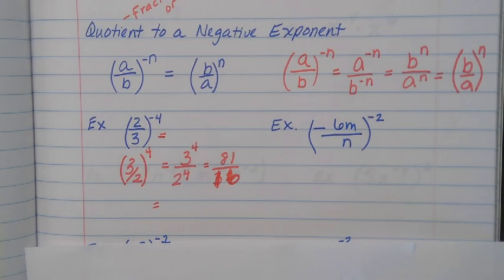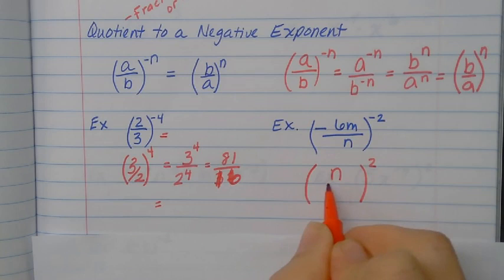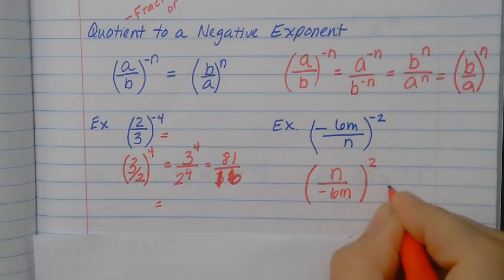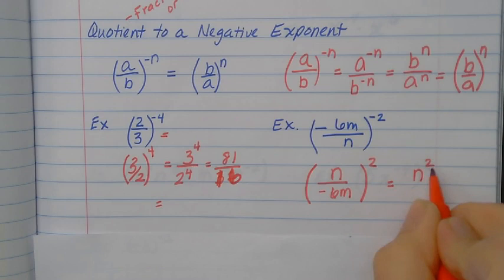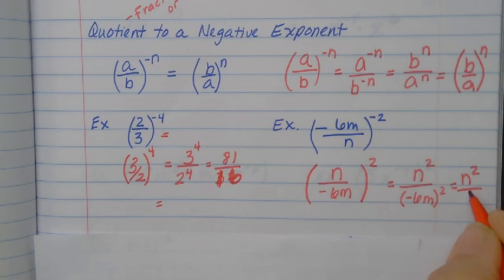Let's look at the next one. It's a negative two exponent, so let's change it to a positive two exponent and flip what's inside. Distribute that exponent to the numerator and denominator, and we get n squared over 36m squared.